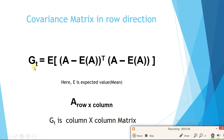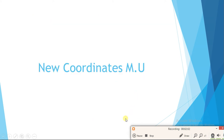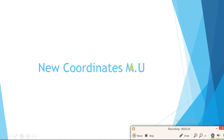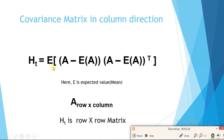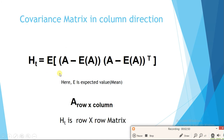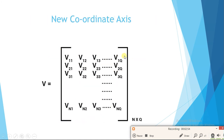Using the row-direction method (G), new coordinates M dot U become t×n×p. For the column-direction method (H), the matrix H_t is row×row. For 2D Square PCA we use both methods simultaneously. From H_t we also find eigenvectors, which are row×row, but we choose only the first q eigenvectors according to eigenvalues, so V becomes n×q.